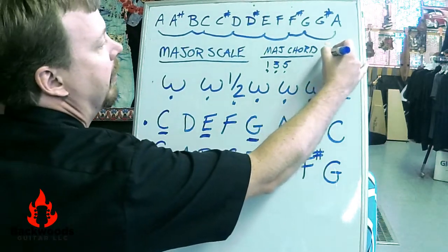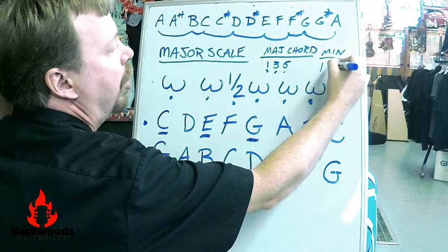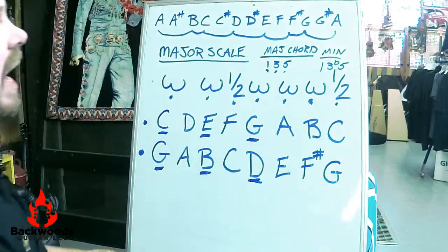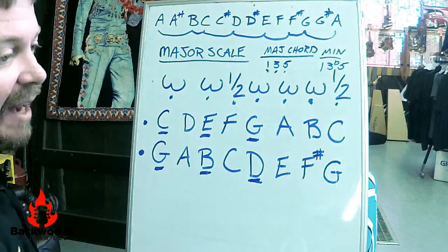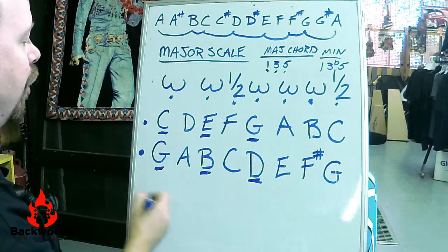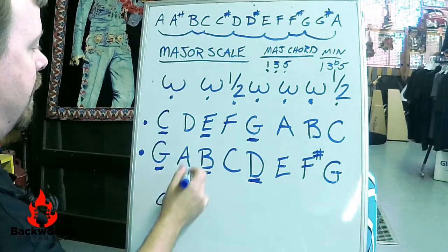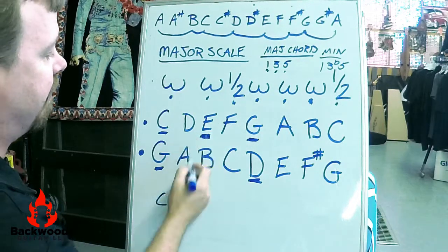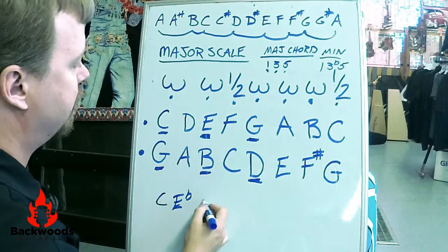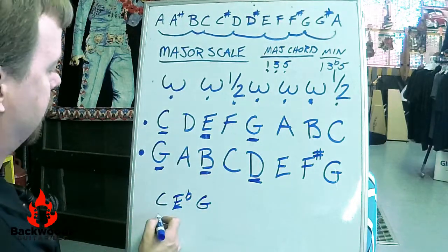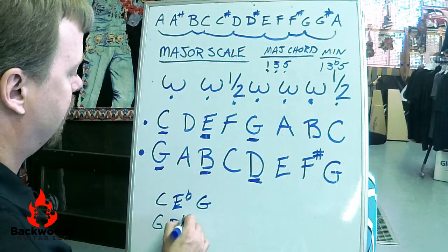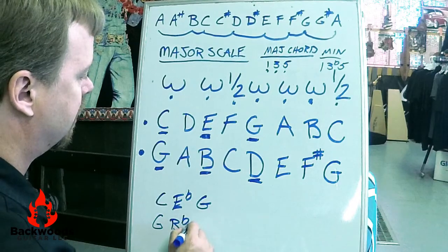Minor chord is one, flat third, and five, which means we just flat the third tone of our scale. So if we were going to do a C minor chord, it would be C, the third flatted would be E flat, and G for your fifth. G minor, G flat the third gives you B flat, and D for your five.